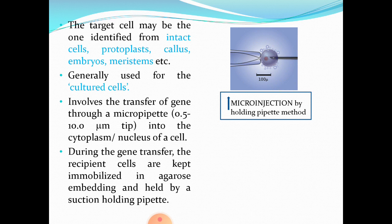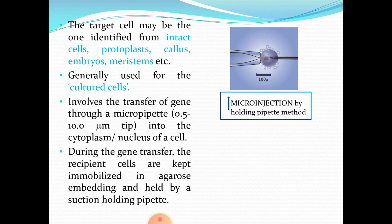This technique involves transfer of gene through a micropipet. You can see in the diagram a micropipet with a 0.5 to 10 micrometer tip. You have the DNA loaded in that micropipet and you transfer it into the cytoplasm of the cell. From the cytoplasm, the DNA then gets into the nucleus. Microinjection involves the transfer of gene through a micropipet of 0.5 to 10 micrometer tip into the cytoplasm or nucleus of a cell.